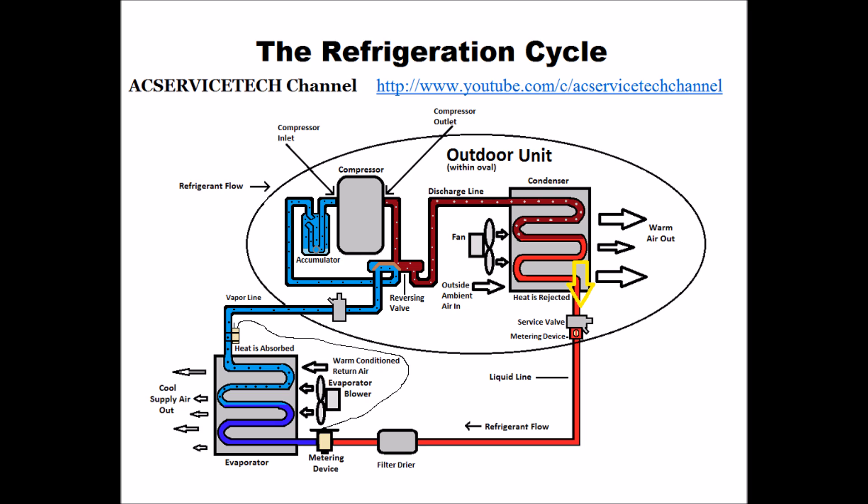It then goes into the service valve and through the non-active metering device. Regardless of where that metering device is located on a heat pump, the refrigerant is going to flow around it and through it — so it's not active at this point, it's kind of like a bypass. It's still a high pressure, high temperature liquid refrigerant even though it's rejected heat in the outdoor coil.